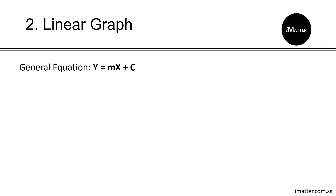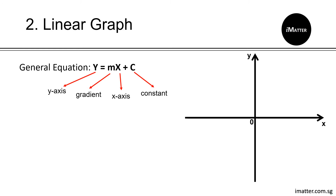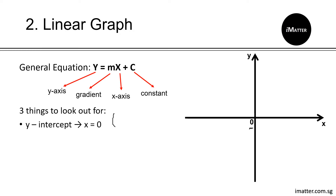Before we go through quadratic graphs, we have to look at the basic concepts of a linear graph. The general equation of a linear graph is y equals mx plus c, where y is the y-axis, m is the gradient, x is the x-axis, and c is the constant. Here we have a simple plot of the y and x-axis where the intersection is 0, also called the point of origin. For a linear graph, there are three things to look out for. First is your y-intercept: substitute x equals 0 into the equation, giving coordinates (0, y-intercept value).